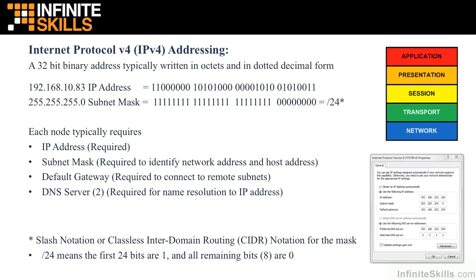If you give a node those two pieces — IP address and subnet mask — it will operate on the network, but only on its local subnet. If you want to operate on the internet or a larger corporate network, you'll also need a default gateway, which is the IP address of the router that this node will attach to. Your default gateway is your path to all other networks.